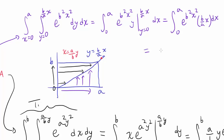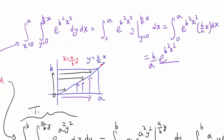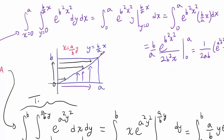Using the same reasoning as before, we have b over a times x times e to the b squared x squared. We divide by 2b squared since the derivative of b squared x squared is 2b squared x. This gives (b/a) divided by 2b squared times e to the b squared x squared, evaluated from 0 to a, which equals 1 over 2ab times (e to the a squared b squared minus 1).